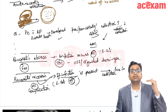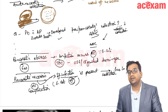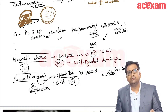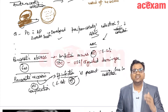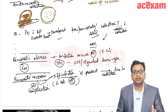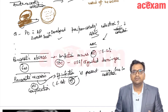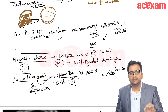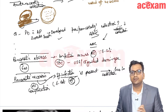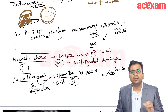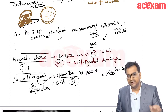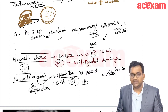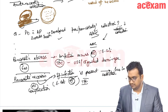When there is pancreatic necrosis with infection, the patient has fever. On CT, there is gas inside the collection, confirming infection both clinically and radiologically. You aspirate the collection, send it for culture, and there will be growth of the organism. Treatment is the same - ultrasound-guided or CT-guided drainage.